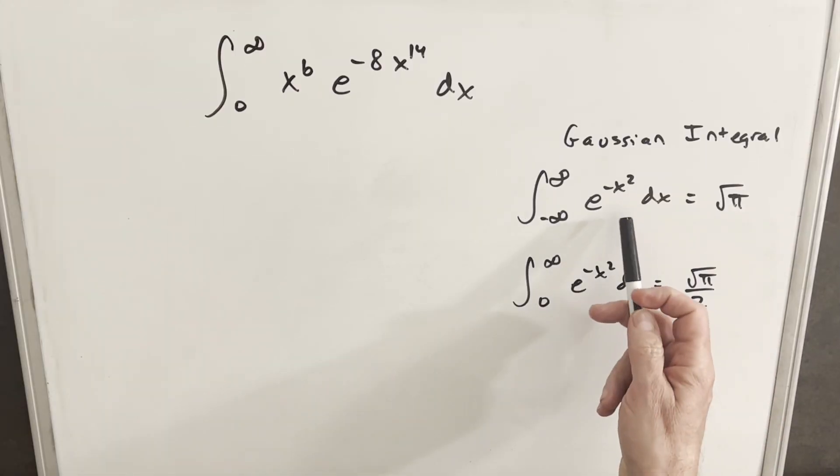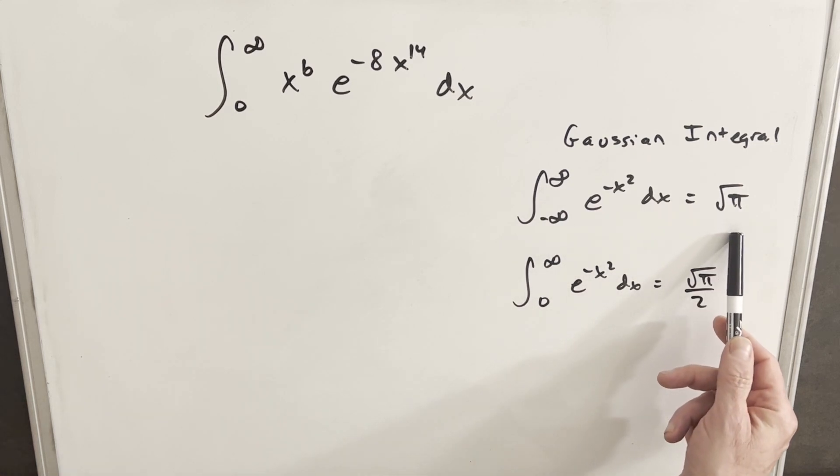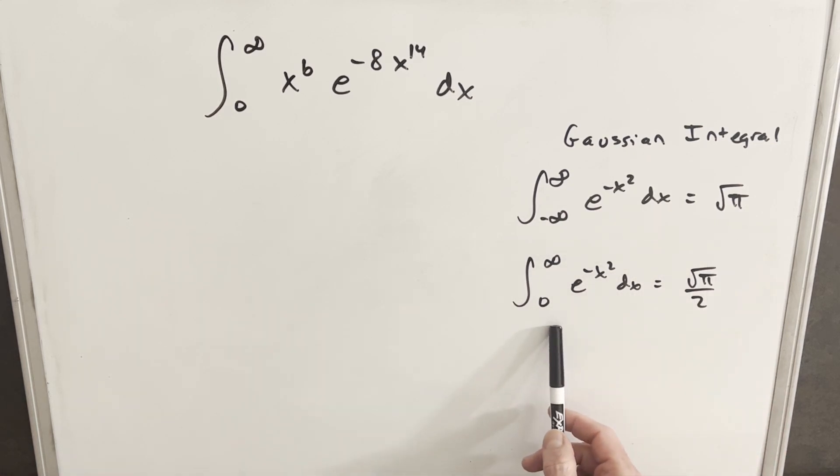Okay, we have here on the right our formula for the Gaussian integral. So if we have something in this form, we notice that our solution is going to be square root of pi. Now this second one looks like it's going to be more useful for us because we've got the bound of 0.